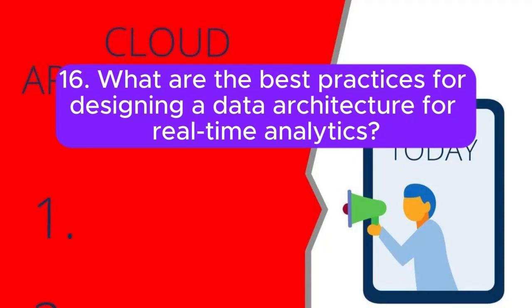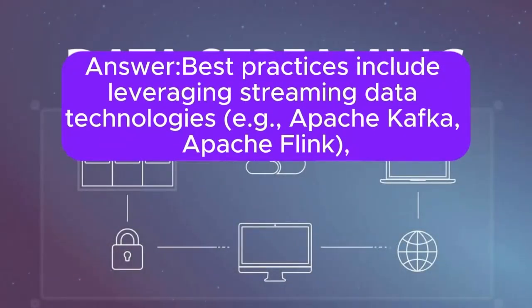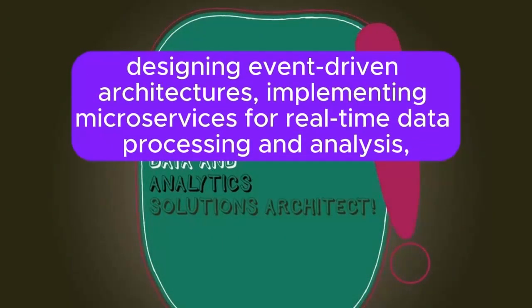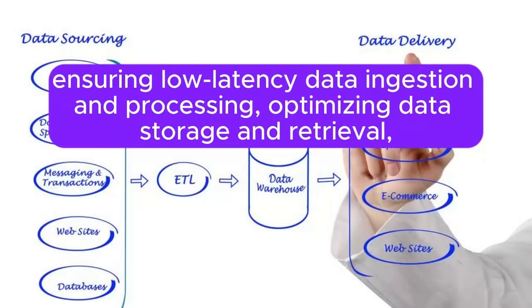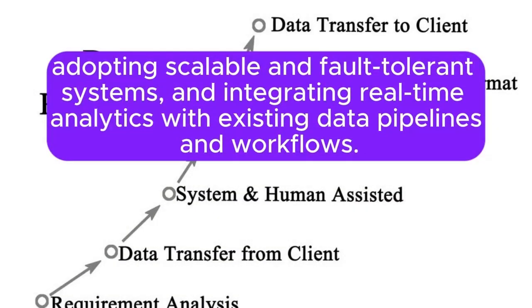Question 16: What are the best practices for designing a data architecture for real-time analytics? Best practices include leveraging streaming data technologies such as Apache Kafka and Apache Flink, designing event-driven architectures, implementing microservices for real-time data processing and analysis, ensuring low-latency data ingestion and processing, optimizing data storage and retrieval, adopting scalable and fault-tolerant systems, and integrating real-time analytics with existing data pipelines and workflows.